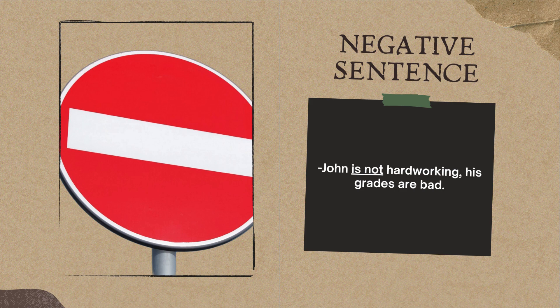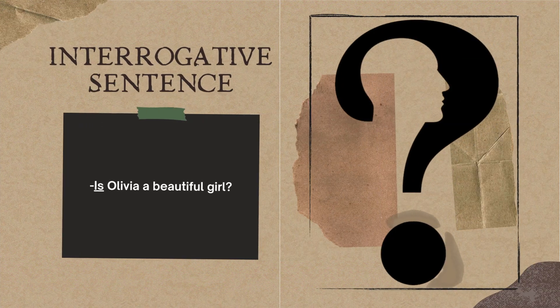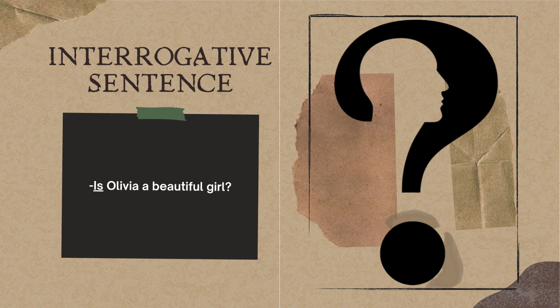Making a negative sentence is pretty easy. All you have to do is put the word not after the verb. John is not hardworking. His grades are bad. When using the simple present tense, we need to start with the verb to be to make an interrogative sentence. All we have to do is swap the subject and verb. Is Olivia a beautiful girl?